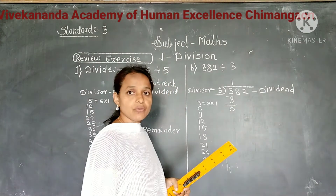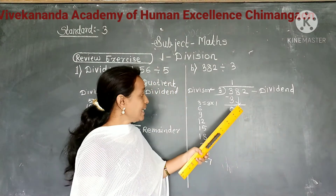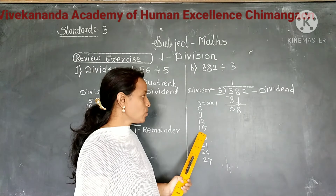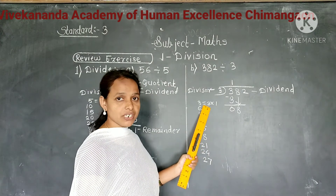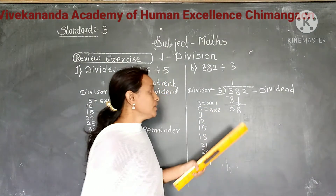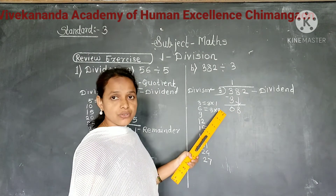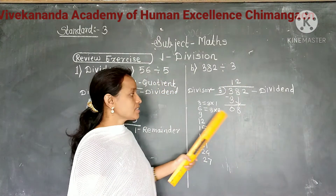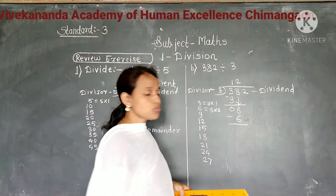Next digit 8, we bring down. Now we divide 8 by 3. But 8 is not in the multiplication table of 3. So less than 8 is 6, which comes in the second place of the multiplication table of 3. So we divide 8 by 3, it gives 2 as a quotient. Write 2 as a quotient in the tens place, and write product 6 below 8. Subtract, it gives 2.